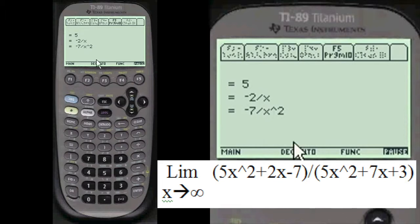When you compute those out, it becomes 5 minus 2 over X minus 7 over X squared. We're going to add infinity in to the X's. Anytime you take a number and divide it by a huge number, it becomes closer to 0.